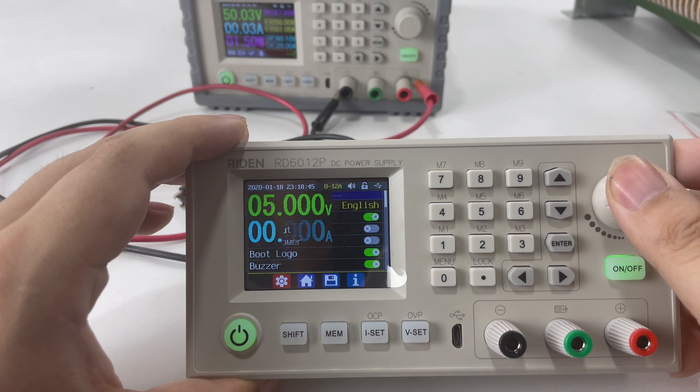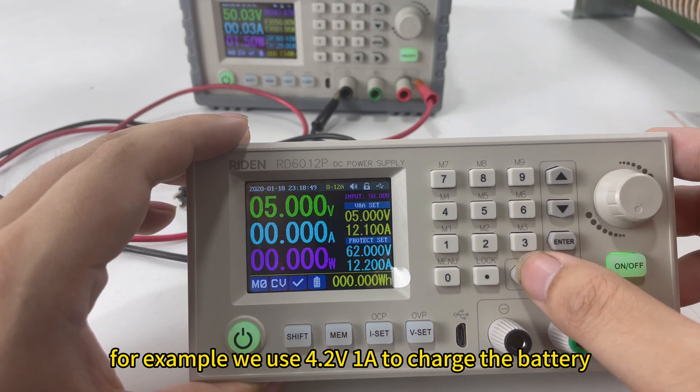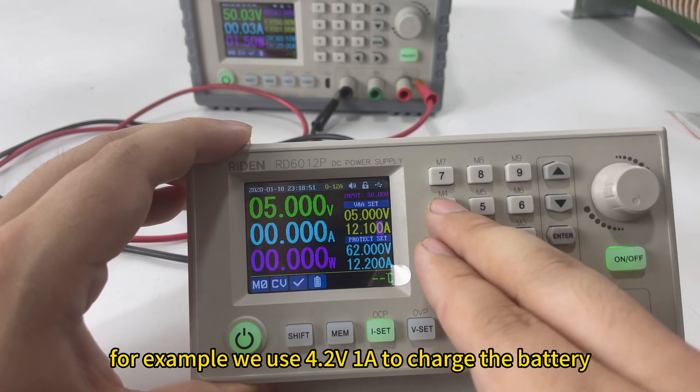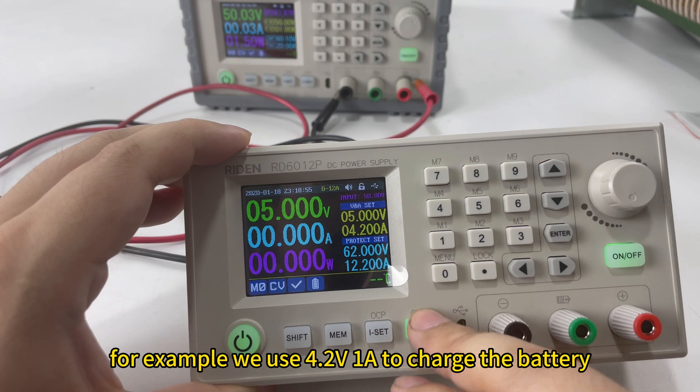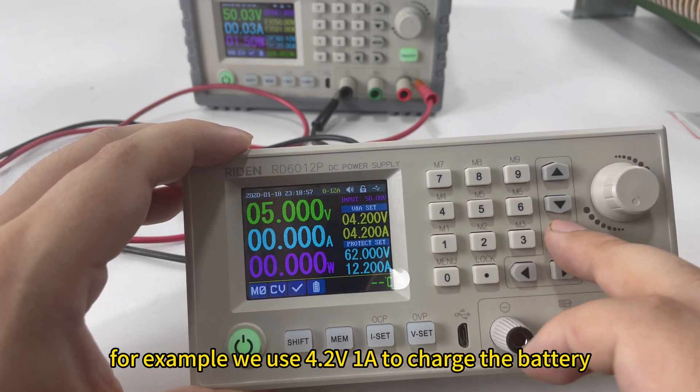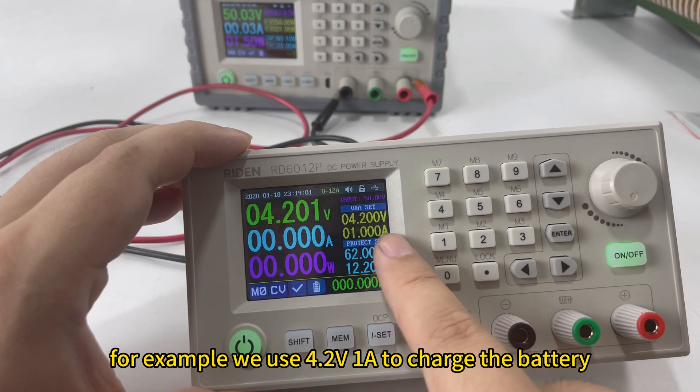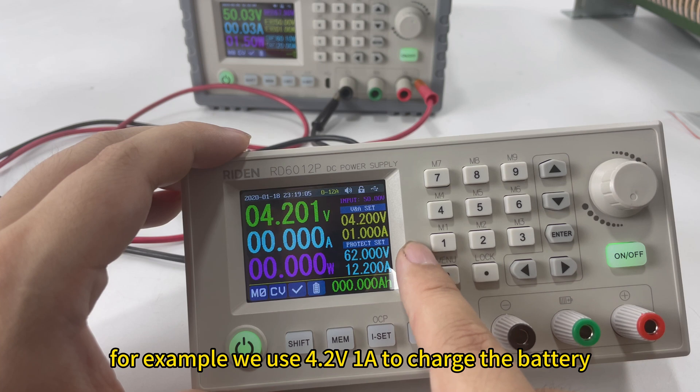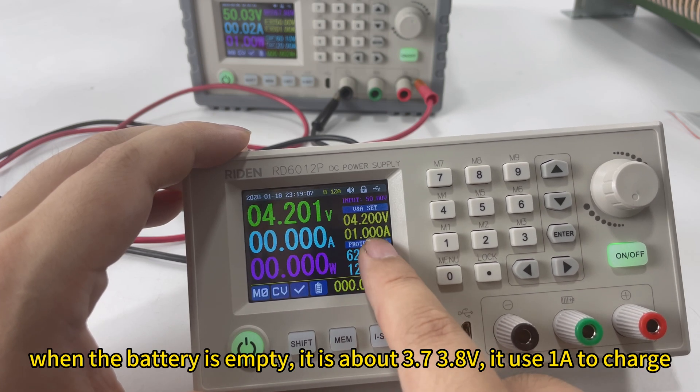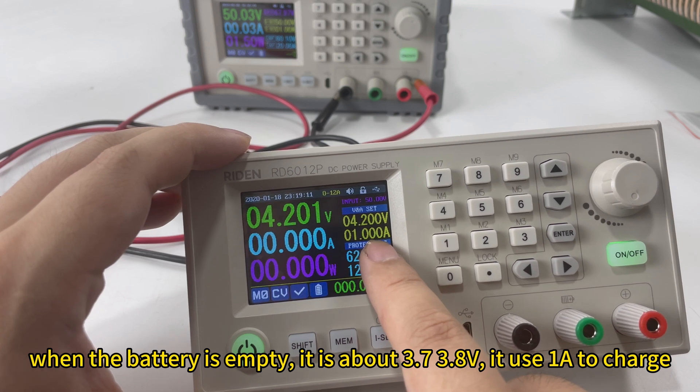This is because our power supply uses CC-CV mode to charge the battery. For example, I change the setting. Normally, 4.2V and 1A. We will use 4.2V and 1A to charge the battery. At first, it will use 1A to charge the battery.